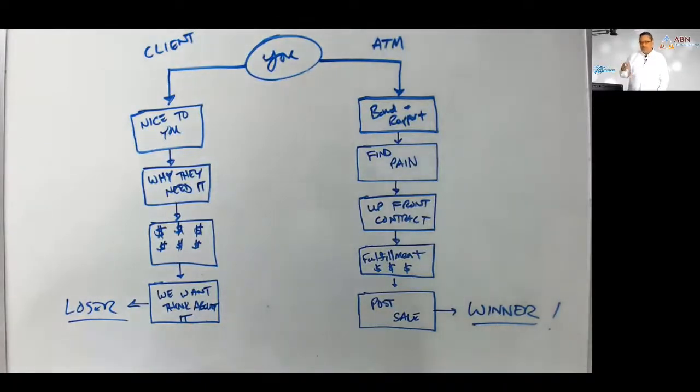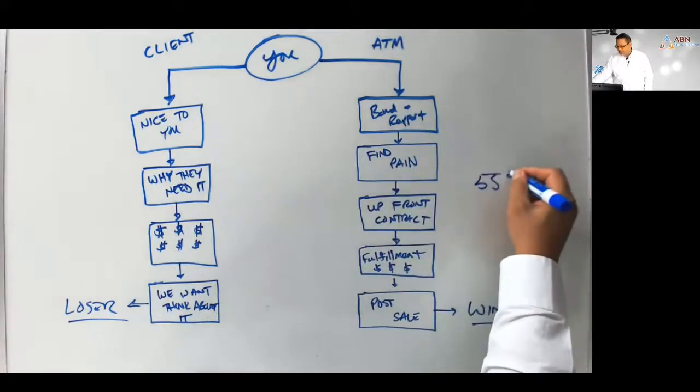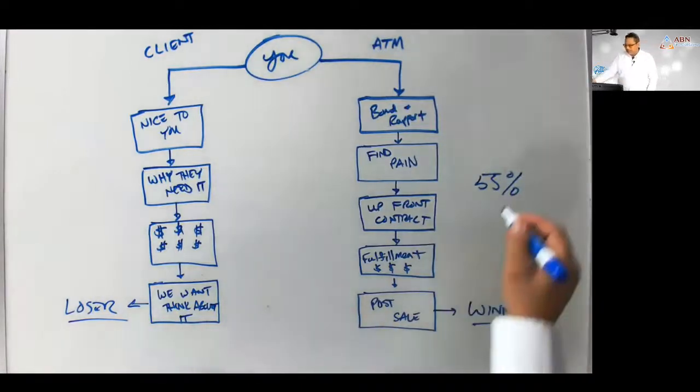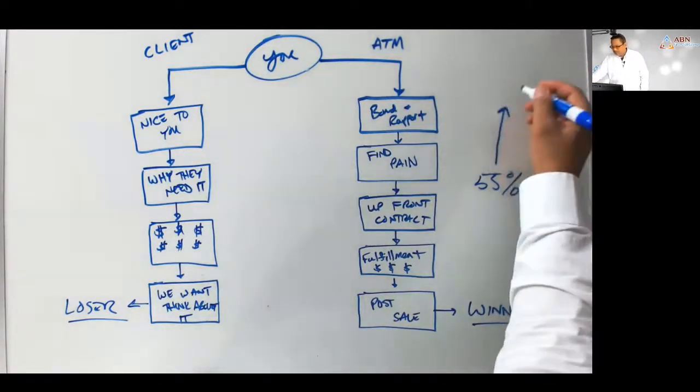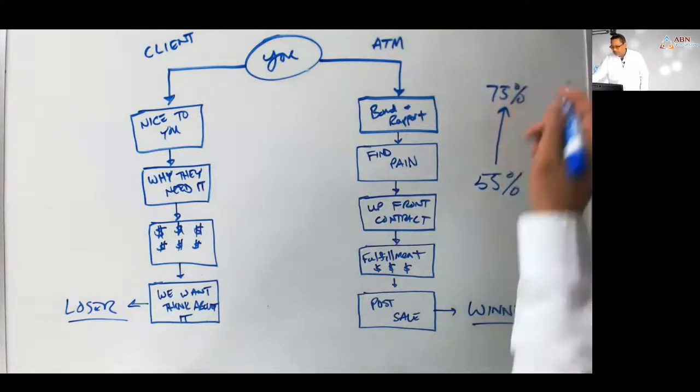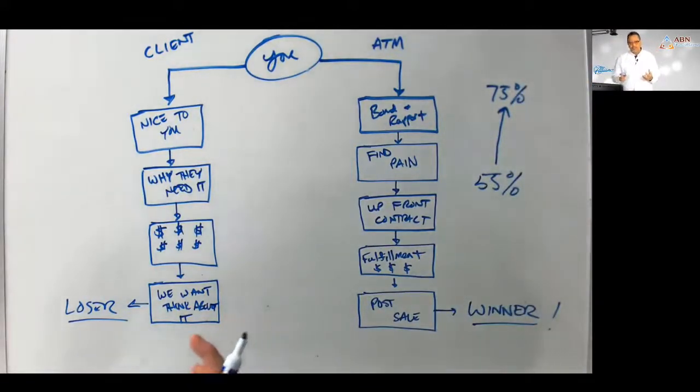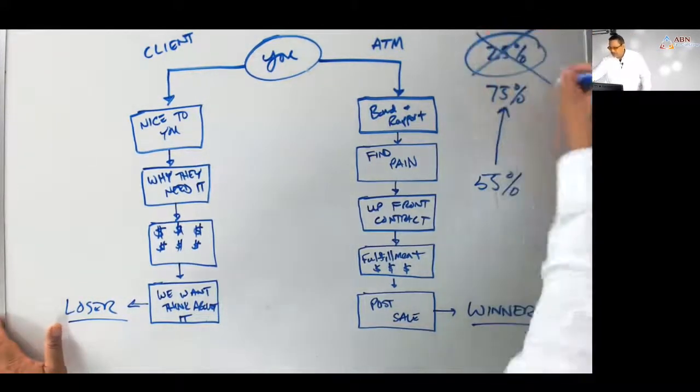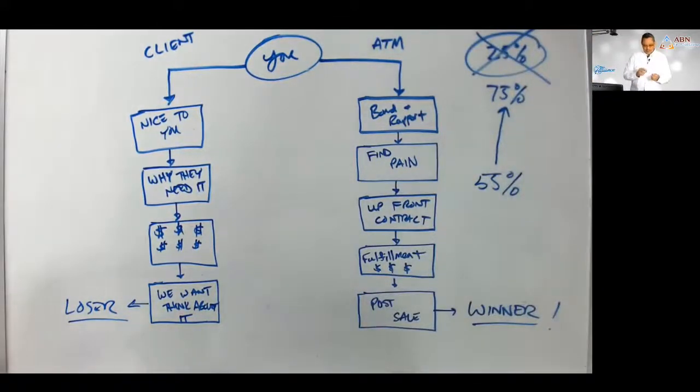Now, percentages. You follow this process at the most basic level, you should take care of 55% of the people you sit down with. Over half the people you sit down with, you're going to help. As you get better with more training and experience, you should get to about a 75% close rate.